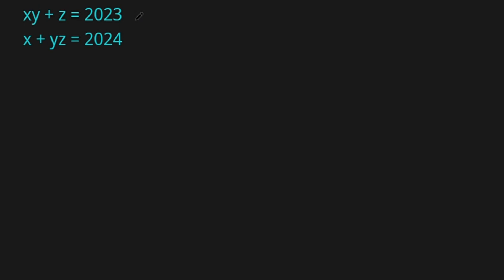Hello everyone and welcome. Let's find the integer solutions for x, y, and z from these two equations: x times y plus z equals 2023, and x plus y times z equals 2024.